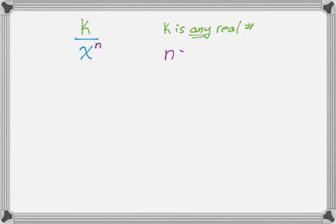It's really important that n be a real number greater than zero. The reason for that is if n was negative, then this thing wouldn't be k over x to the n — it would really be k times x to the absolute value of n, which means that the x would be in the numerator, which is a different scenario. Now here's what I claim: if x gets really, really big, then eventually this quantity is going to effectively equal zero.